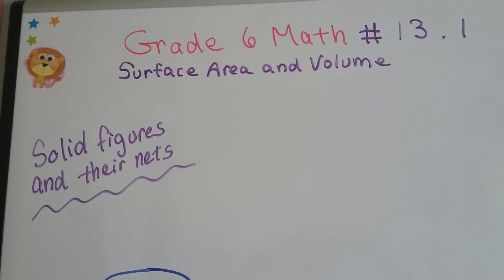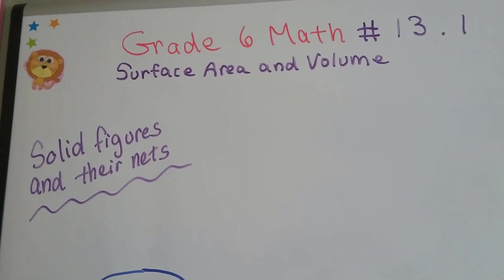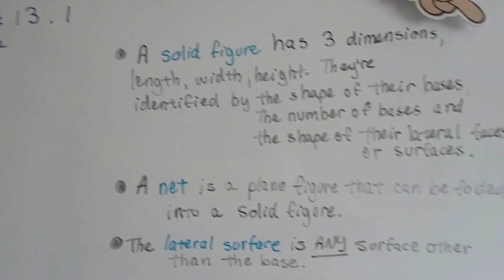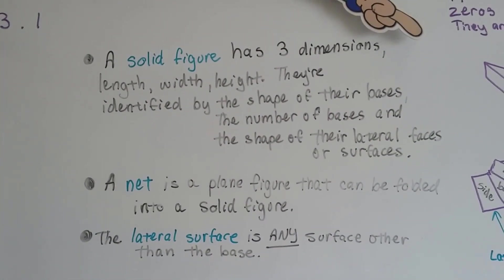So we're going to do solid figures and their nets. Not a fishing net, and not a net value. This is an unfolded shape.